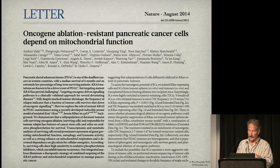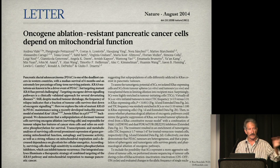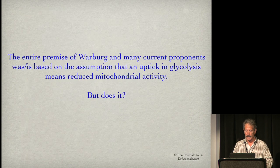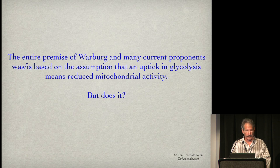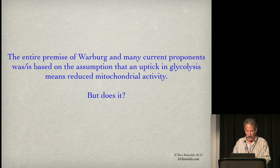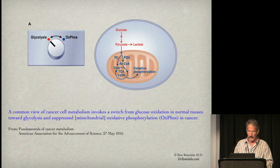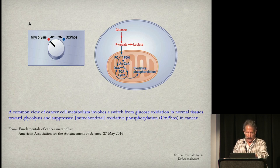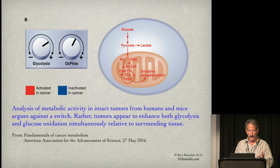Oncogene ablation-resistant pancreatic cancer cells — the most virulent kind that kills almost everybody — depend heavily on mitochondrial function to burn fatty acids. The entire premise of Warburg and proponents like Tom Seyfried is based on the assumption that an uptick in glycolysis means reduced mitochondrial activity. But the evidence shows that's wrong — there isn't a switch between one or the other; it's both. Cancer is proliferative and wants all the energy it can get.